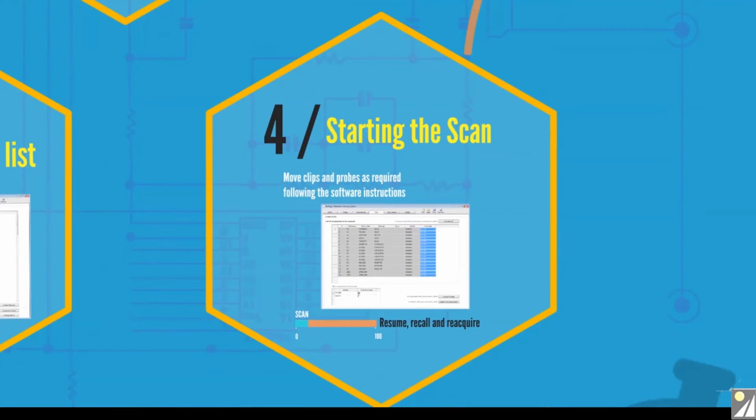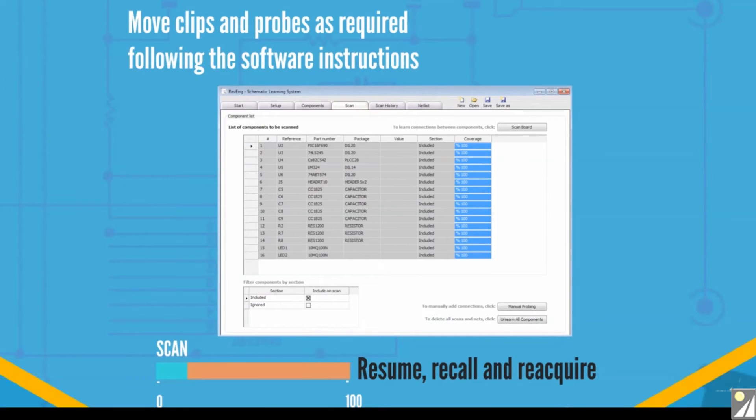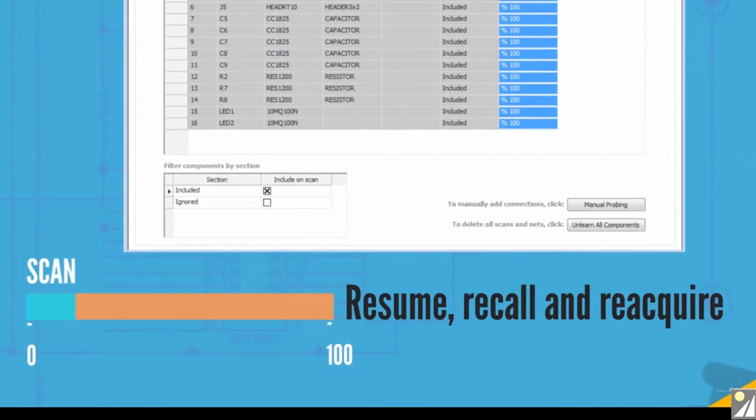Run the scan when instructed by the software to do so. Move the clips and probes around the PCB to cover 100% of the possible connections. You'll be able to stop and resume this process whenever needed. You can reacquire scan connections if you need to make corrections.